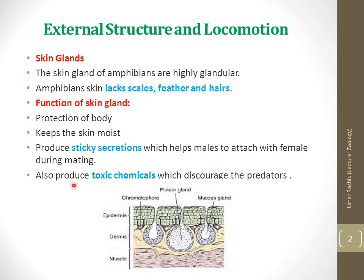The functions of frog skin include: protection of the body, keeping the skin moist, producing sticky secretions which help the male to attach with females during mating, and producing toxic chemicals via granular (poison) glands which discourage predators.